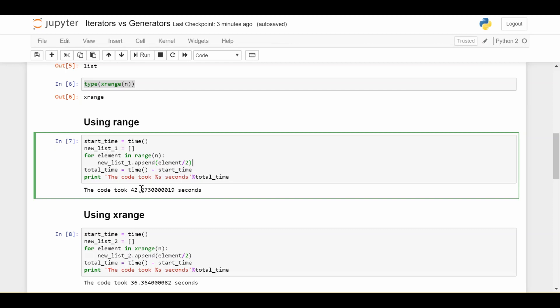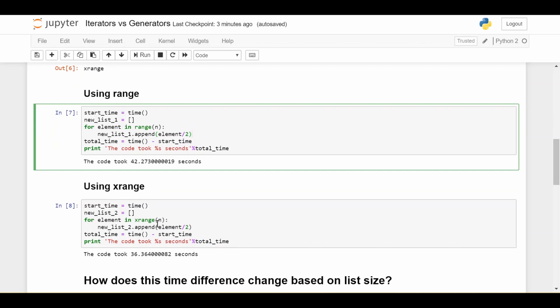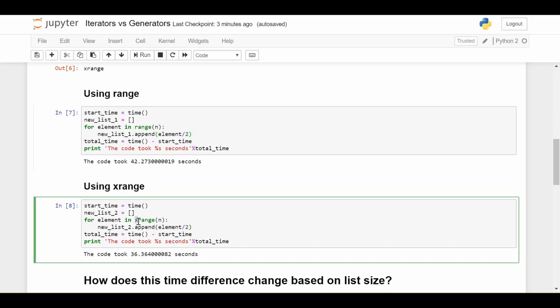The question is how does that compare to using xrange? If you look at the xrange code down here, it's pretty much the same. The only difference is that I put the letter X in front of range, which makes it an xrange, which is a generator rather than having all these numbers live in memory at the beginning. So we do the same thing for each element in xrange n. We have new list 2, which is this list up here, dot append half of that element, and then we just get the total time and we see it takes 36 seconds. So we have a little bit of a speedup, right? It took about 8 seconds faster versus 42 seconds. It's not like the crazy speedups we saw in the vectorization or other videos, but it is still something that you should take into account if you're dealing with very, very big numbers, right?